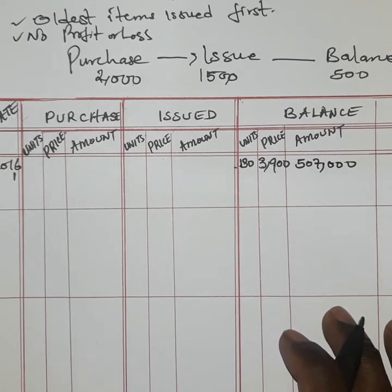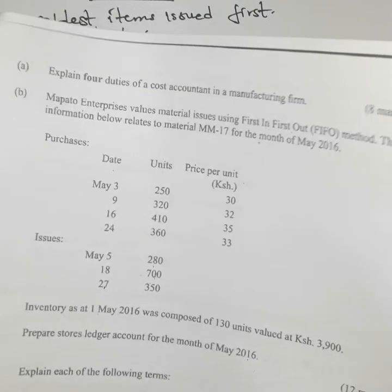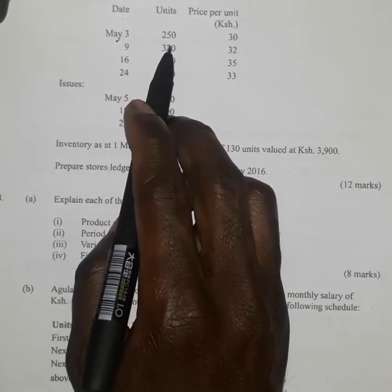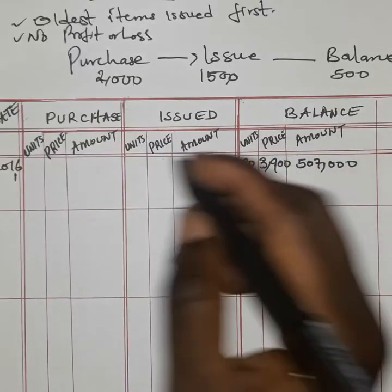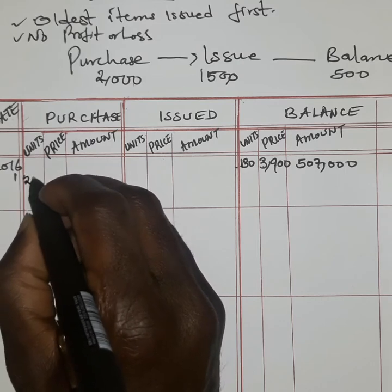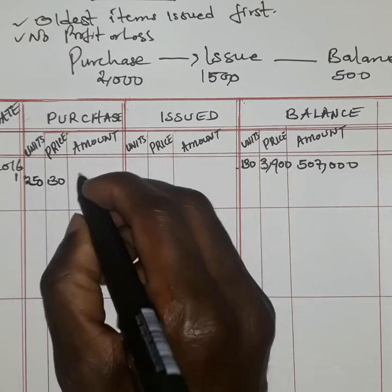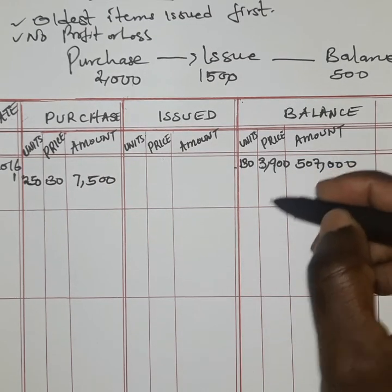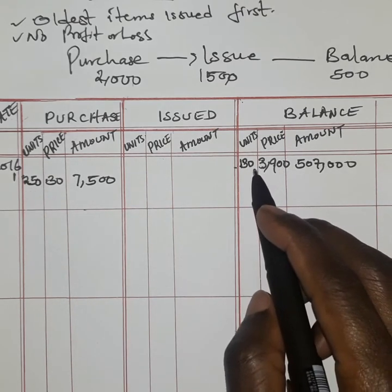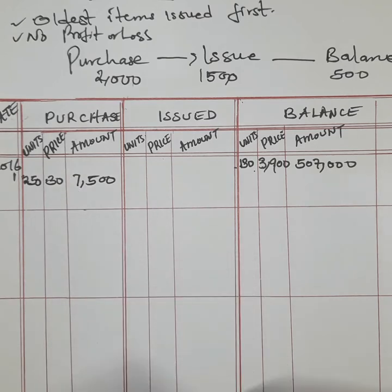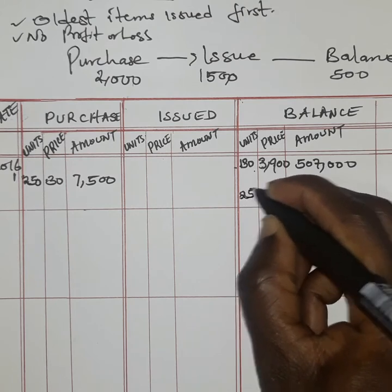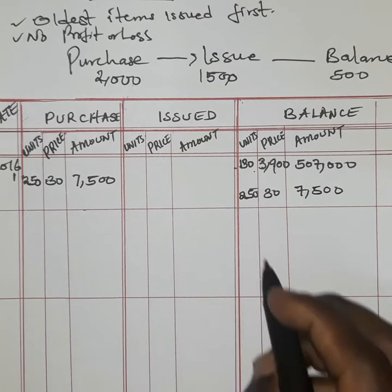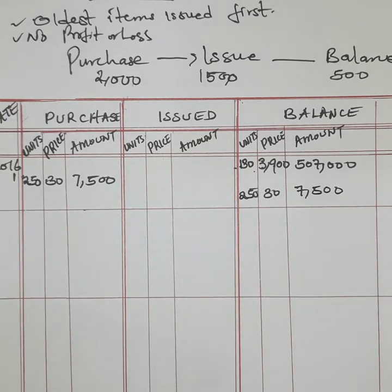Now we are told there were some purchases. The first purchase date is 3rd May: 250 units were purchased at 30 shillings per unit. When you multiply the two, you get 7,500 as the value of the purchase. The balance at this date is the opening stock plus what was purchased. So the balance is 250 units each at 30, giving us 7,500.